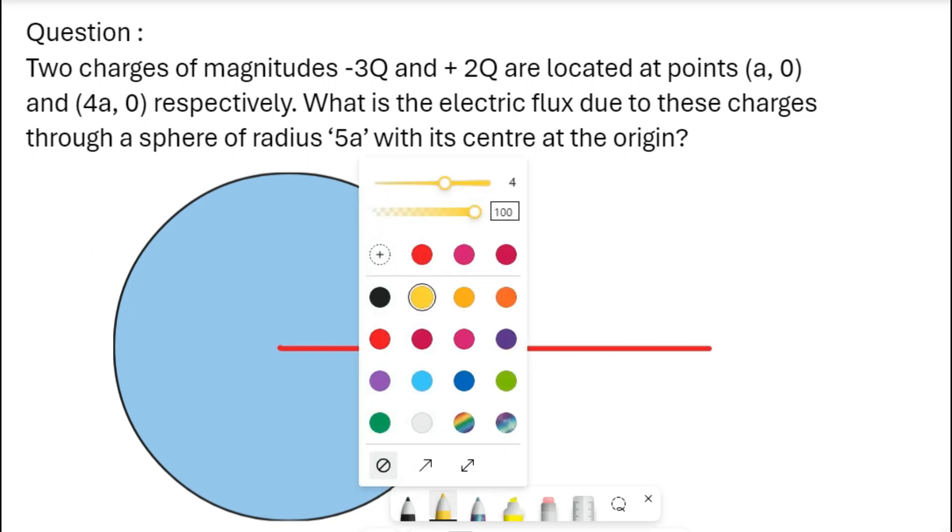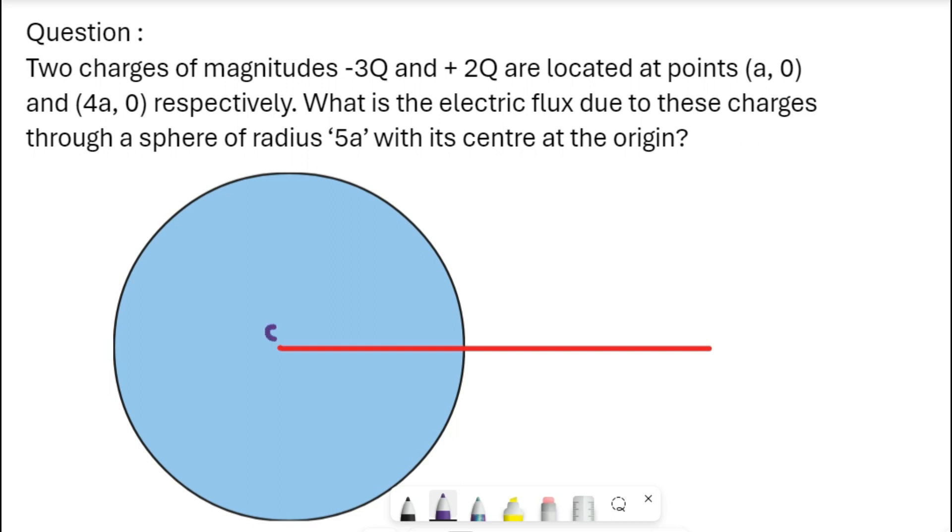As per question, radius is 5a. And I am marking the points like a, 2a, 3a, 4a, and 5a to make you understand well.